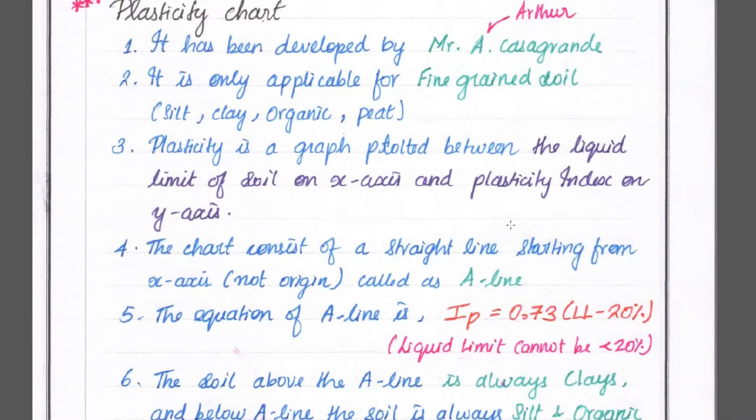This plasticity chart is developed by Mr. A. Kassegrende and it is only applicable for fine-grained soil like silt, clay, and organic peat.